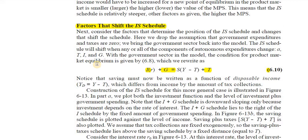Government expenditure is largely neutral to many considerations. Intuitively, government expenditure is not dependent upon extraneous factors like the cost involved or risk involved. Government undertakes expenditure largely for social considerations — for example, during the COVID pandemic, government would still undertake expenditure even if there is no good rate of return in the economy.